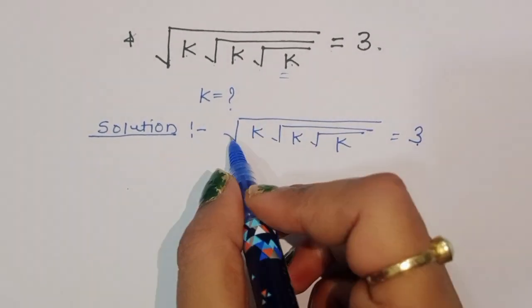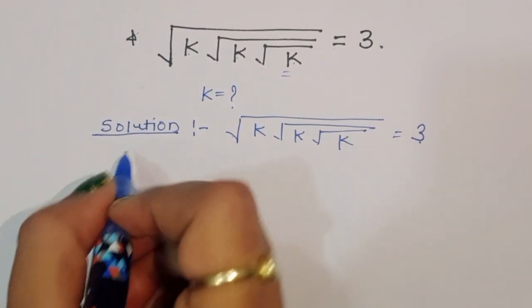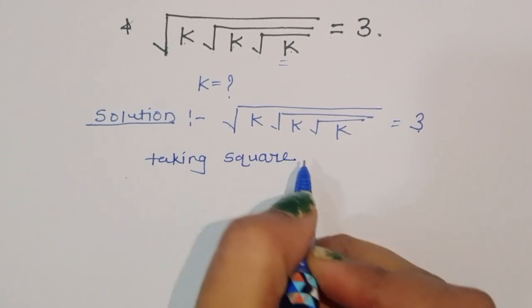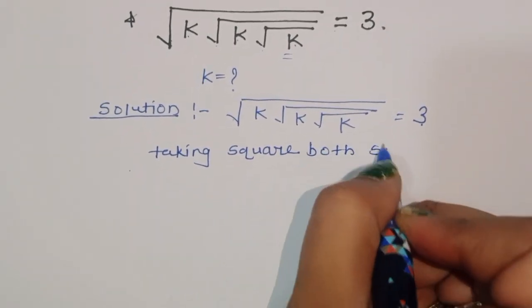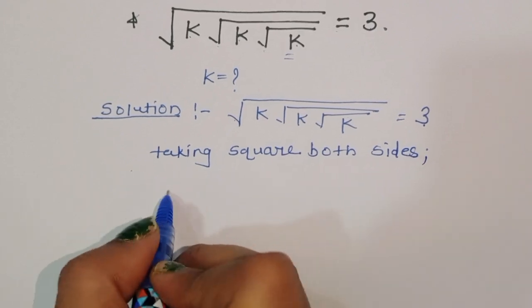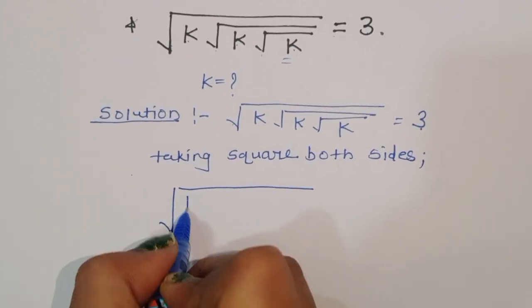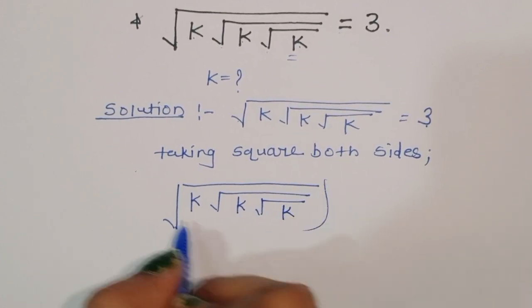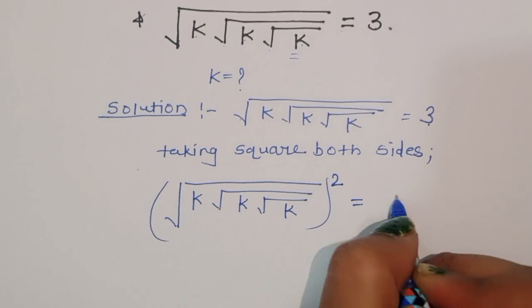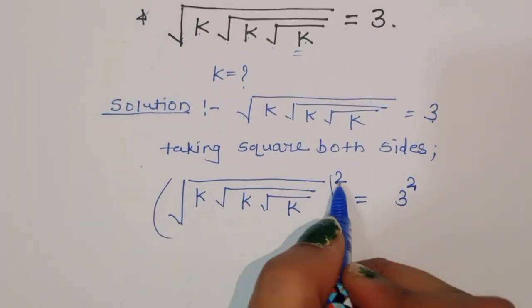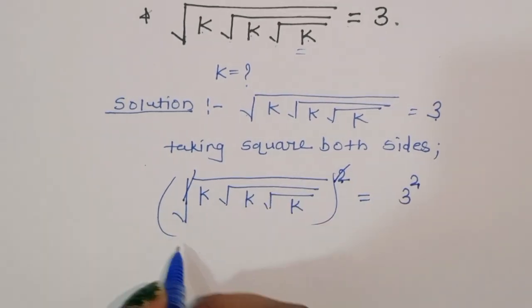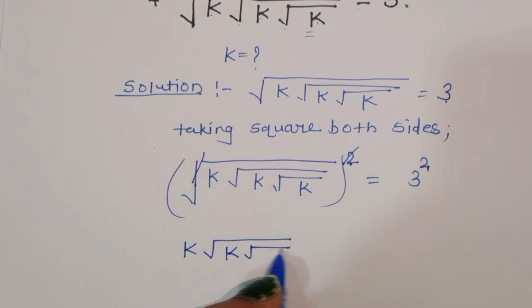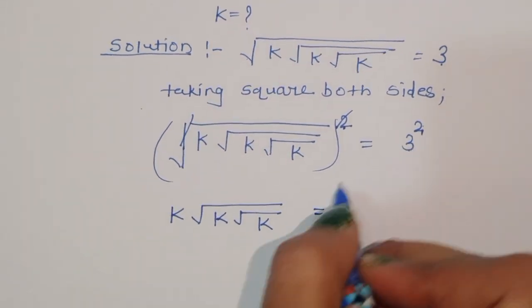Now we can do one thing here. Taking square both sides, then we will get: square root of k, square root of k, and the square root of k squared — the square cancels the square root. We get k times square root of k times square root of k is equal to 9.